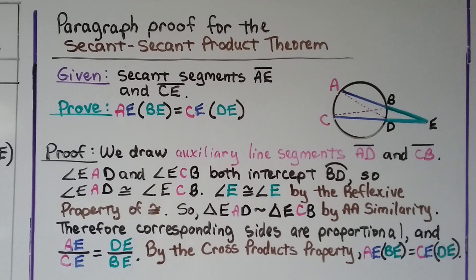Therefore, corresponding sides are proportional, so we have this proportion: AE over CE is equal to DE over BE. And by the cross-products property, AE times BE is going to equal CE times DE. See? Cross-products.